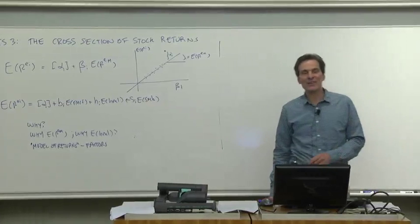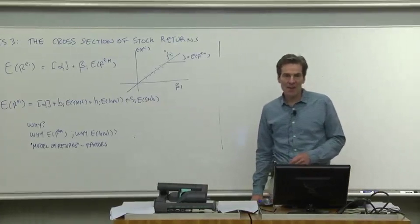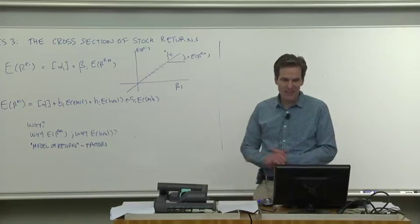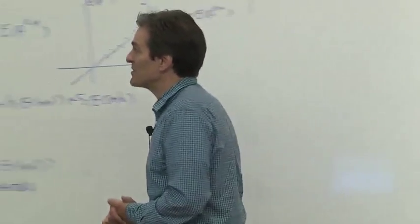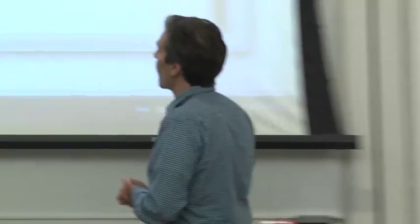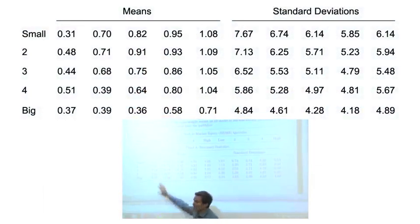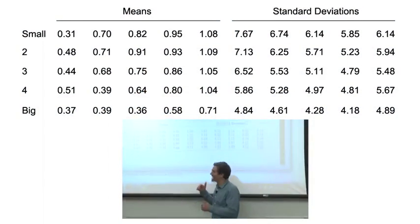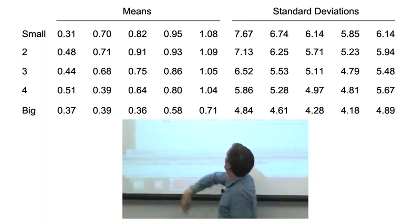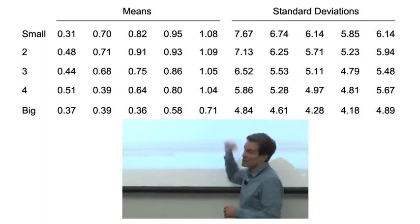One paper we're going to read carefully this quarter is Fama and French's paper on value effects. So they like to put these facts in tables of numbers, and their table 1A gives you a similar table of numbers. What we've got here is stocks sorted into 25 portfolios based on size and book to market. So the small stocks go that way, and the value stocks go in that direction.